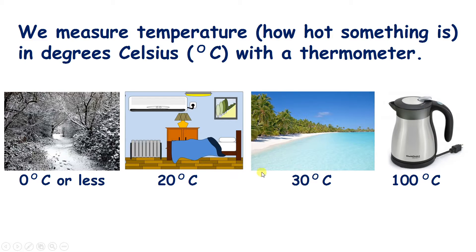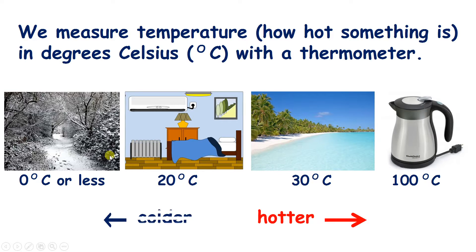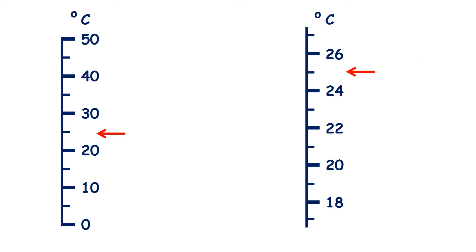So we have four pictures, and on the right we have hotter or warmer, and towards the left we have colder temperatures. So we might want to measure temperature using a scale.